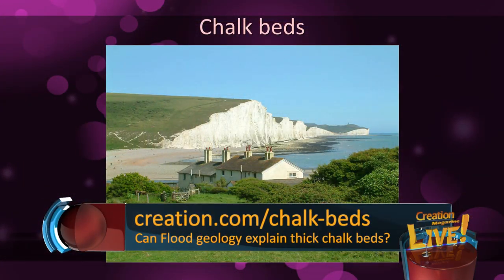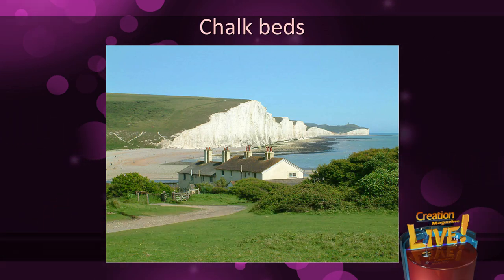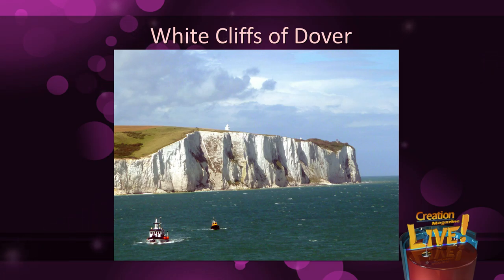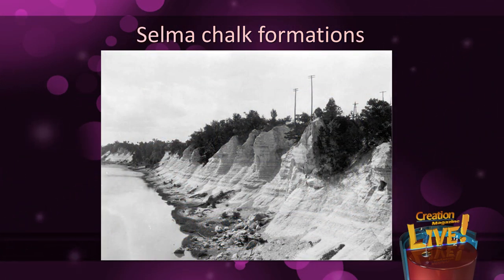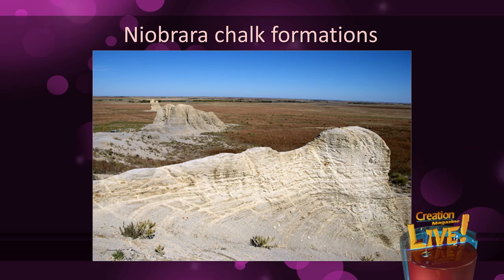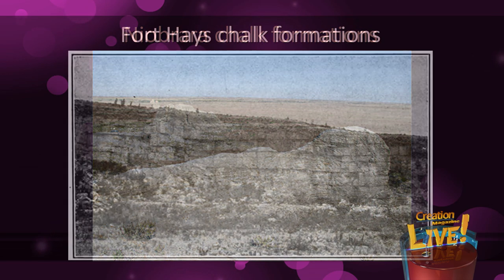What about chalk beds? Chalk beds found all around the world — most people would have heard of or seen, whether in person or in photographs, the famous White Cliffs of Dover in southern England. The same beds of chalk are also found along the coast of France on the other side of the English Channel. The chalk beds extend inland from England and northern France, being found as far north and west as the Antrim Coast and adjoining areas of Northern Ireland. Extensive chalk beds are also found in North America, through Alabama, Mississippi and Tennessee — the Selma Chalk — and in Nebraska and adjoining states, the Niobrara Chalk, and in Kansas, the Fort Hayes Chalk.